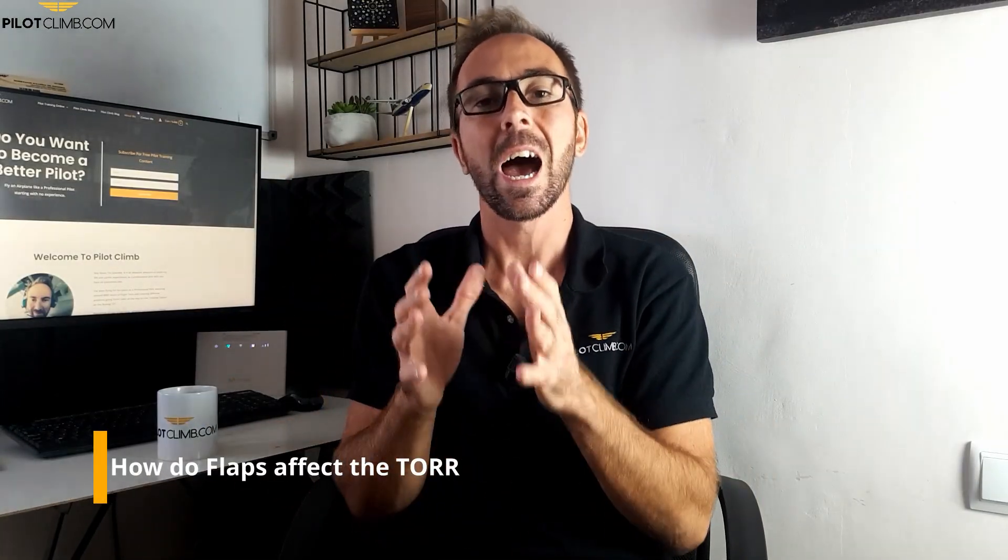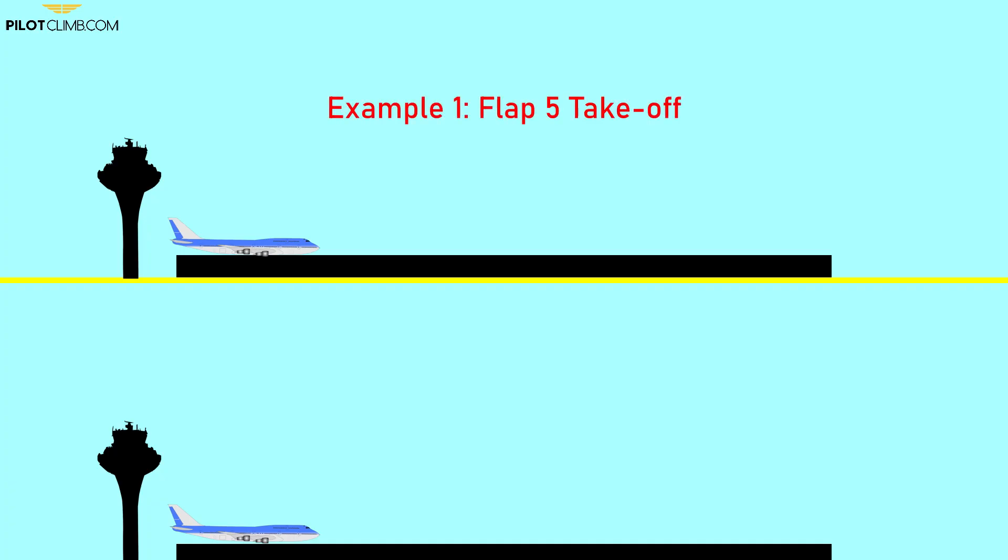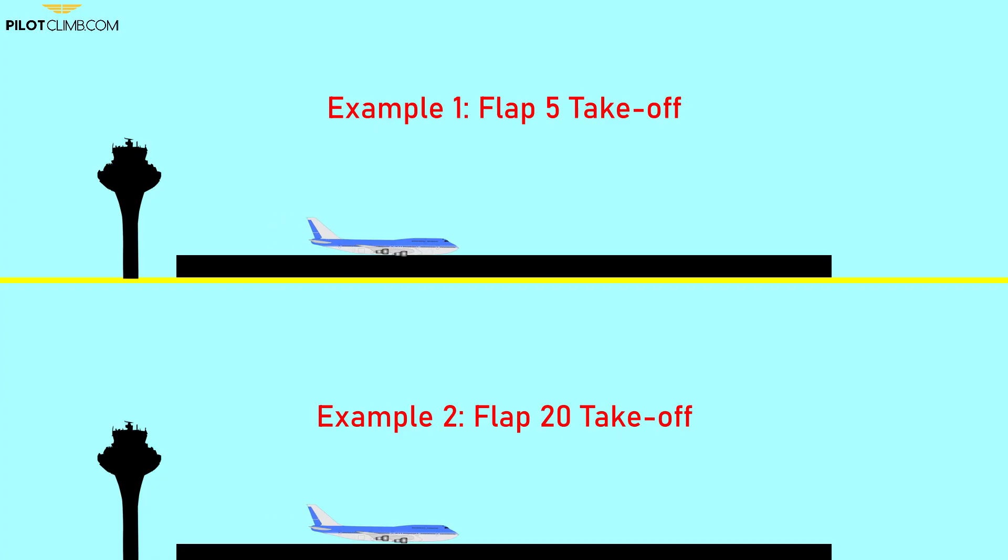So, let's talk about how the flaps affect your takeoff run required. The higher the flap setting, the shorter will be your takeoff run, as long as you stay within the takeoff flap range. If you take two aircraft with the same weight and use a lower flap setting in one case and a higher flap setting in another, the aircraft with more flap extended will rotate earlier. Why is that? It's because by increasing the flap, you increase your chord line and your coefficient of lift. A wing with a higher flap setting will produce a higher coefficient of lift, which reduces the stall speed and reduces the rotation speed.